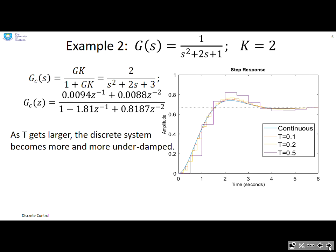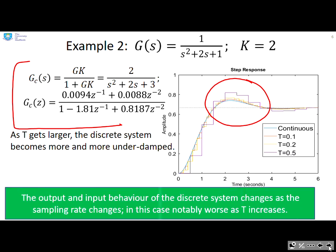Example 2 then, which is a second-order system. You'll see again I've given you the closed-loop transfer functions, both marked down here, and we've given you the closed-loop responses. Now the most important observation here, if you look at this part of the graph, is that as T the sampling time gets larger, the system becomes more and more underdamped. It starts overshooting and oscillating more. So the output and input behavior of the discrete system changes with the sample rate, but more importantly it's notably worse as the sampling time increases.